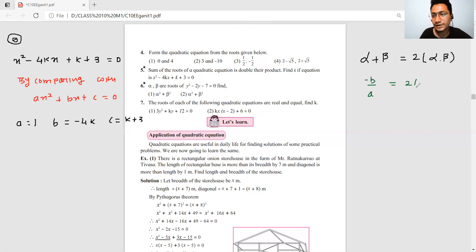Alpha plus beta equals minus b upon a, and alpha into beta equals c upon a. So minus b upon a equals 2 into c upon a. Canceling a, minus b equals 2c. Minus of minus 4k equals 2 times k plus 3. So 4k equals 2k plus 6, which gives 2k equals 3. Therefore k value is 3. Clear, simple.